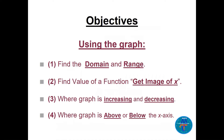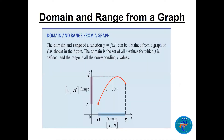Now, domain and range. Suppose we have this red graph here. I will teach you a nice method to find the domain easily just by looking. Take the graph and press it on the x-axis. It will become a line covering all the x values — that is the domain, closed from a to b. If one of them is open, we say open.